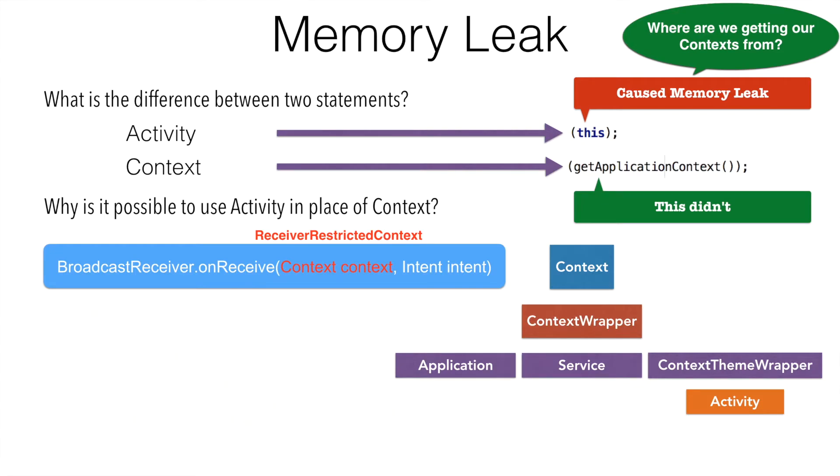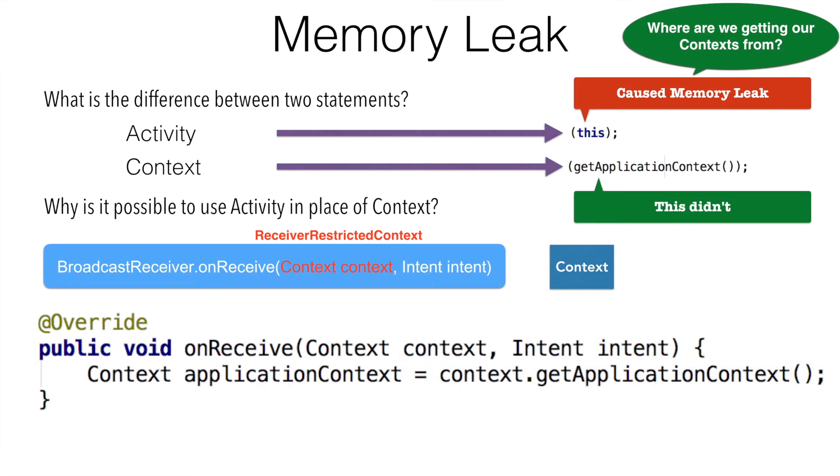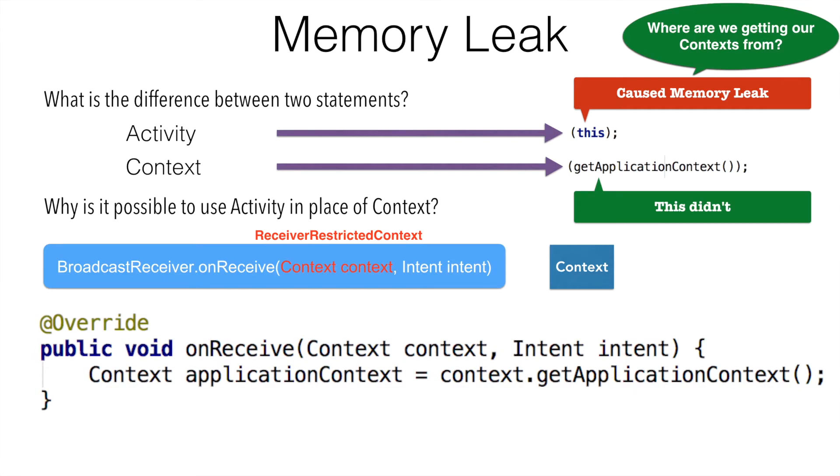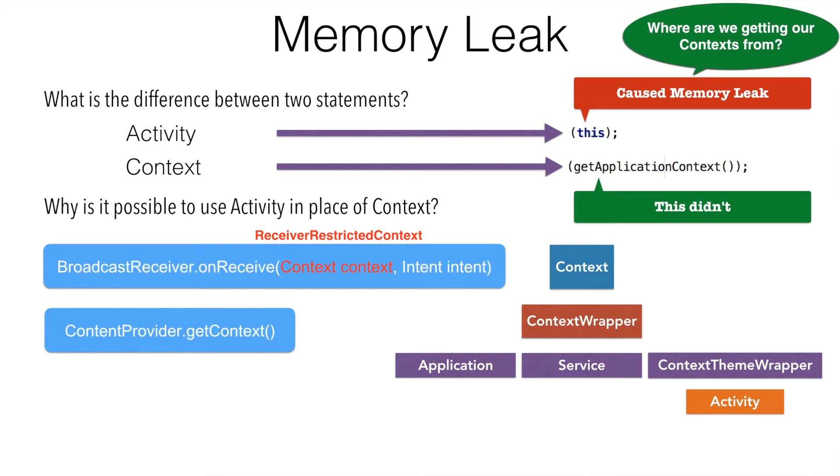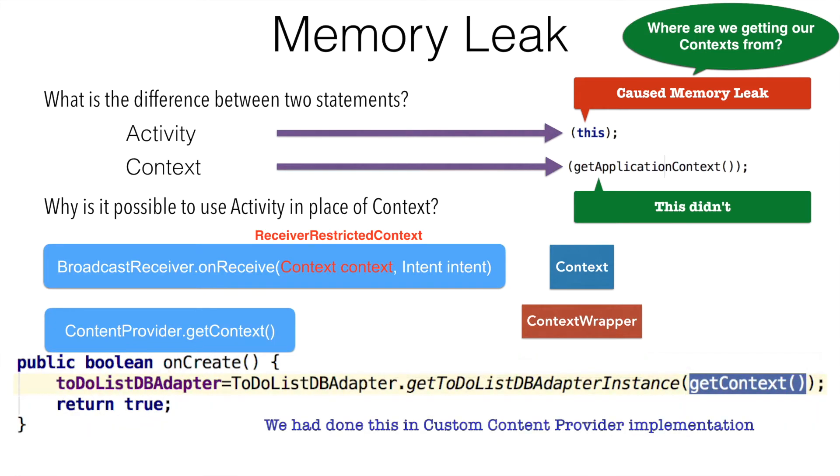However, if you need application context, you have to invoke getApplicationContext on the context argument that you just received here. And what about the content provider? Well, content provider is not a context. However, if it wants one, it can get one using a method called getContext.